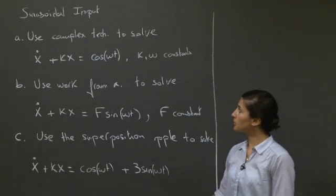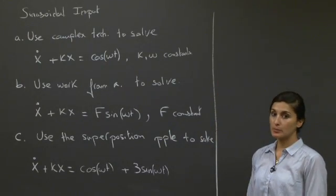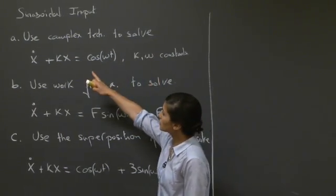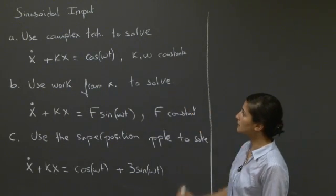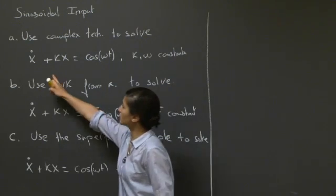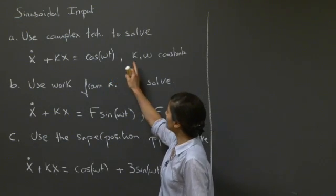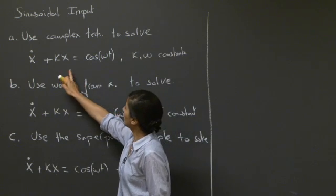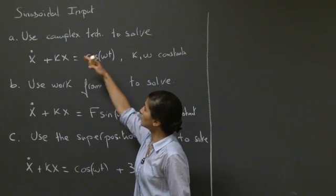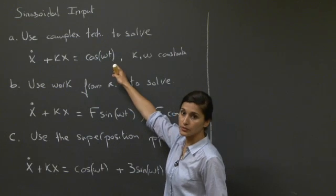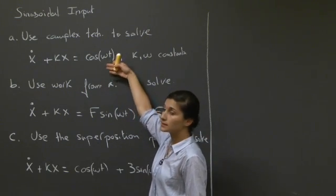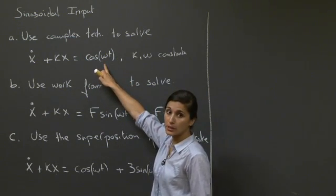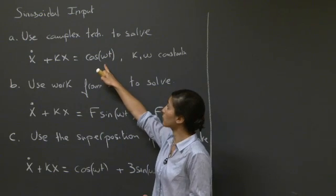Welcome back. In this session, we're going to look at sinusoidal inputs for ordinary differential equations of order 1. In question 1, you're asked to use complex techniques to solve x-dot plus kx equals cosine of omega t, where k and omega are constants. This is a first-order ODE, and the sinusoidal input refers to the right-hand side, where we are forcing a system with a function of angular frequency omega, meaning a period of 2 pi over omega.